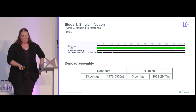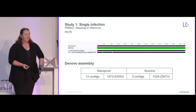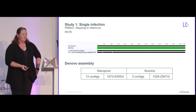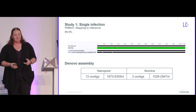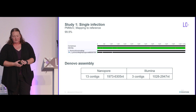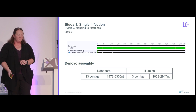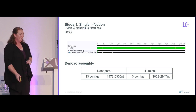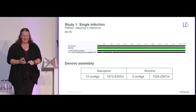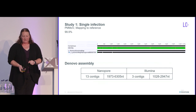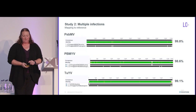De novo assembly was really good as well. We were able to get full-length genome contigs from the de novo assembly — we don't always get that with Illumina, but with nanopore it was really nice to see that coming through.